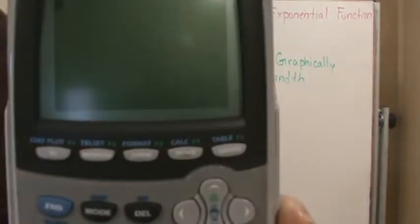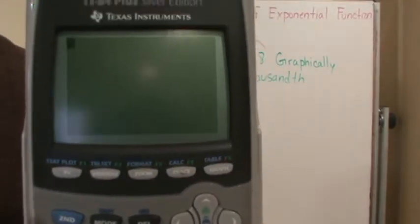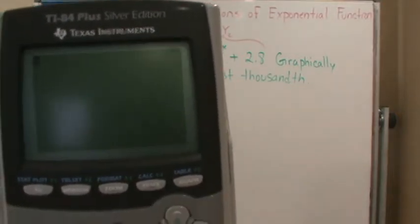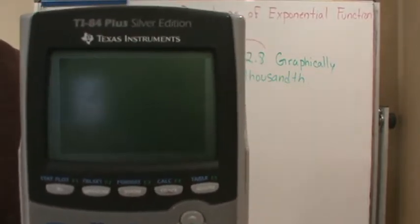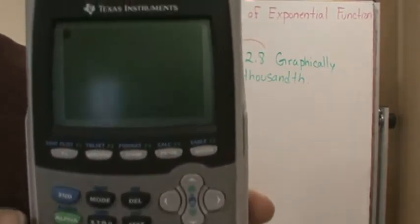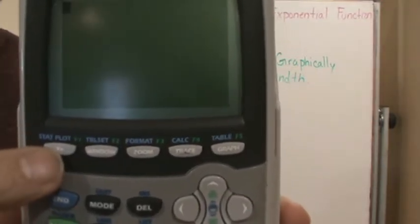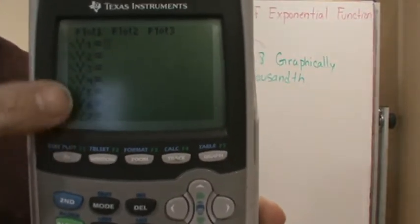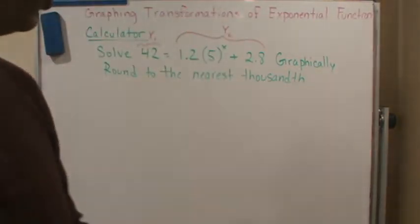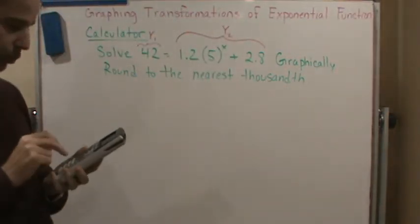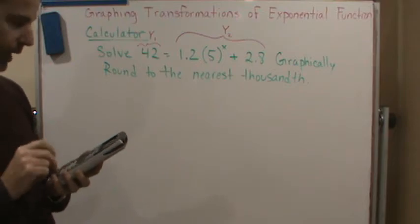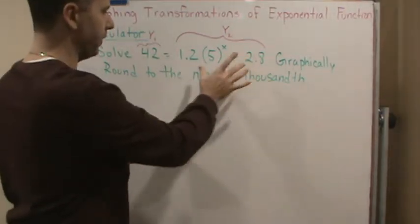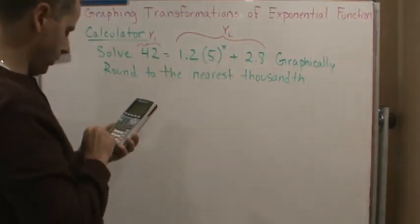The first thing you do is go to the Y= key and press it. This is a TI-84; you can also do this on an 83 or 86, and Google is your friend if you have a different model. Here are all the Y functions you can choose from. Y1 is going to be the left side — I'll make Y1 equal to 42 — and Y2 is going to be the right side, so I'll type that whole expression into the calculator.